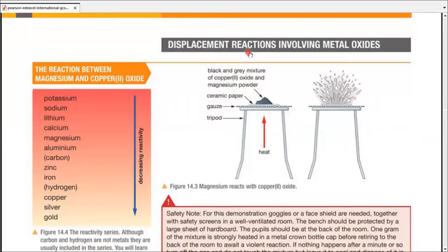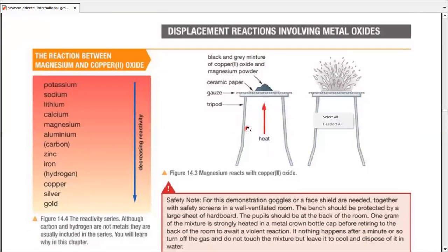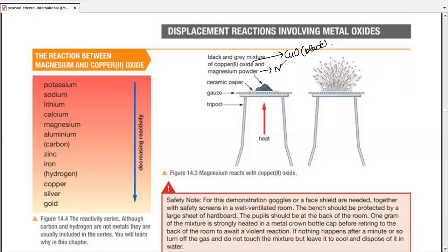We are familiar with displacement reactions involving different metals and non-metals. Let's discuss a displacement reaction with the example of metal oxides. You can take a tripod stand, put a wire gauze, put a ceramic paper, and heat it from the bottom. We use a black powder — copper oxide — and magnesium, which is gray in color. As soon as you mix and heat them, you get a vigorous splash and they react.